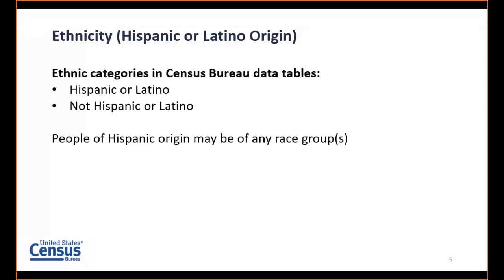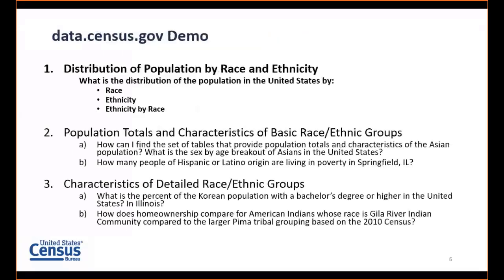Also in our data tables are two basic ethnic group categories: Hispanic or Latino, and not Hispanic or Latino. Just as in race, 100% of the population belongs to one of these two categories. Race and ethnicity are two distinct concepts, so people of Hispanic origin can be of any race group. We'll take a look at this on the live site.